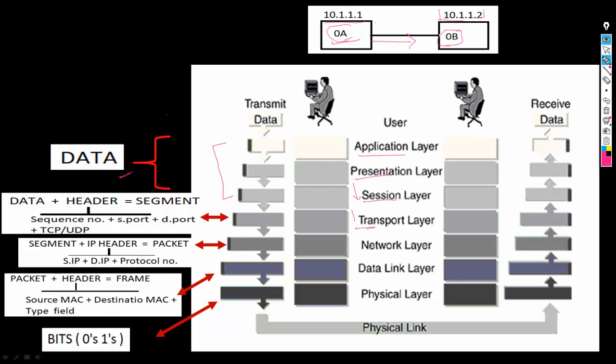Once data reaches the transport layer, a header will be added and the data will be divided into multiple segments. A sequence number will be added to those segments. The header will include sequence number, source port, destination port, and TCP or UDP information. This format is called a segment.